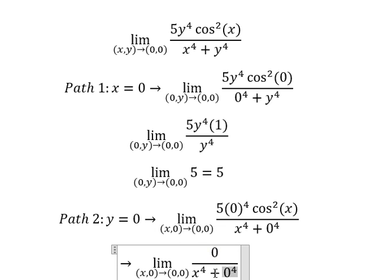This one we simplify. Number zero divided by x to the power of four, we have number zero.